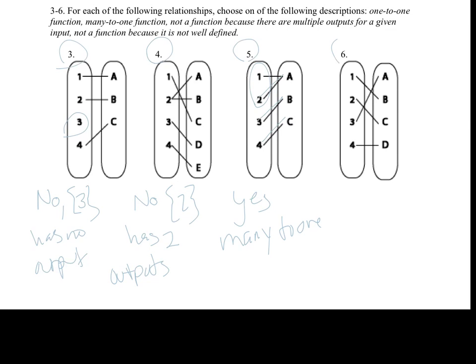With our last example, is it a function? One has an output, two has an output, three has an output, four has an output. Does anything have two outputs? No — everything has just one line going out. So yes, it's a function. Now, what type? A only comes from three, b comes from one, c comes from two, and d comes from four. So this one is one-to-one.